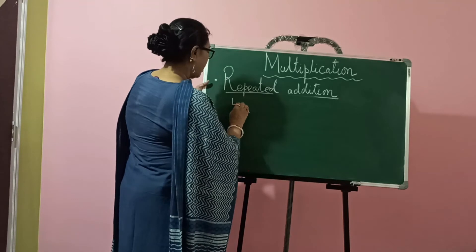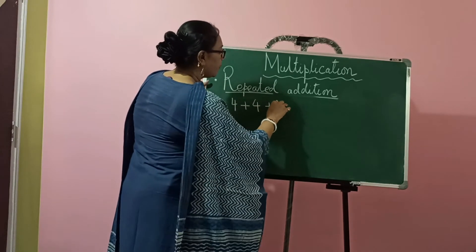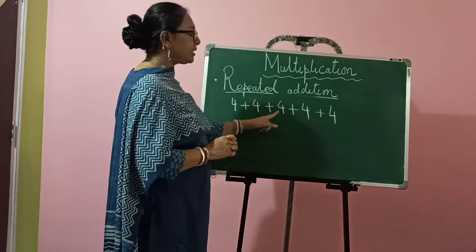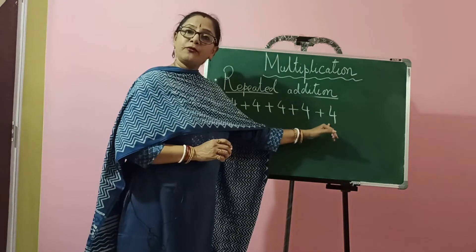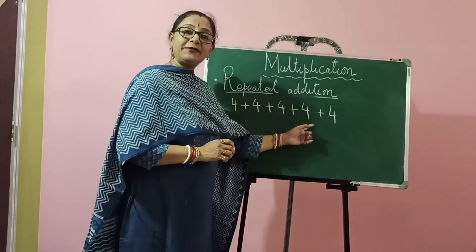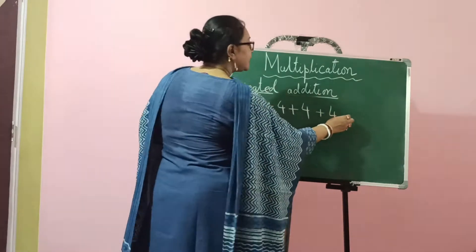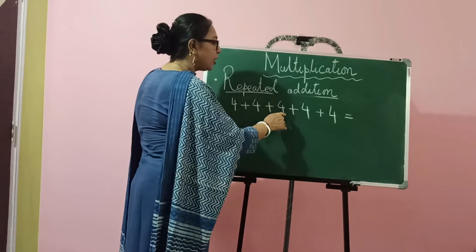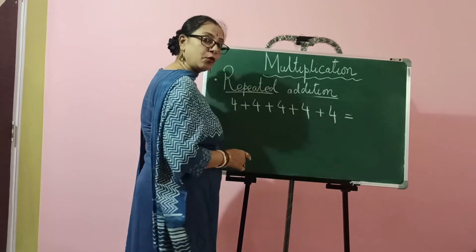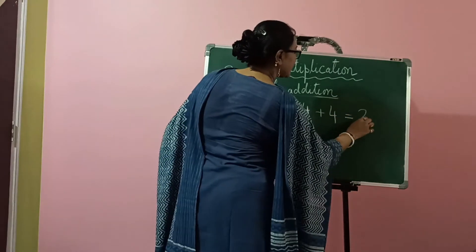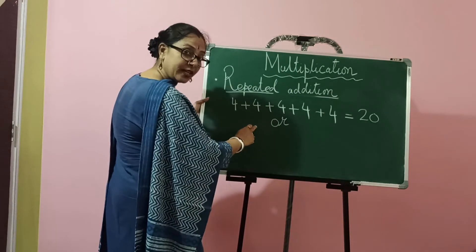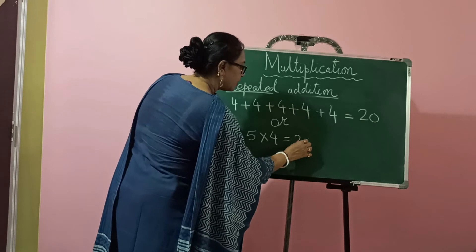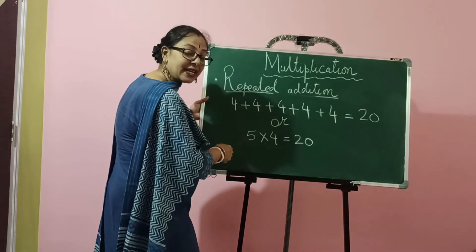Now say you have 4 plus 4 plus 4 plus 4 plus 4. Here how many times do we have 4? We have added 4 five times, and our addends are the same. So 4 plus 4 is 8, 8 plus 4 is 12, 12 plus 4 is 16, 16 plus 4 is 20. This can be written in multiplication form as 5 times 4, which gives you 20.